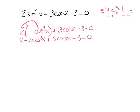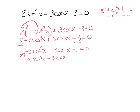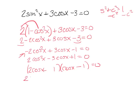Combining terms, I get minus 2 cosine squared plus 3 cosine x minus 1 equals 0. I hate having a negative leading term, so I multiply through by negative 1. Now I can double bubble: 2 cosine x minus 1 equals 0, and cosine x minus 1 equals 0. Solving the first: add 1 and divide by 2, giving cosine x equals one-half.